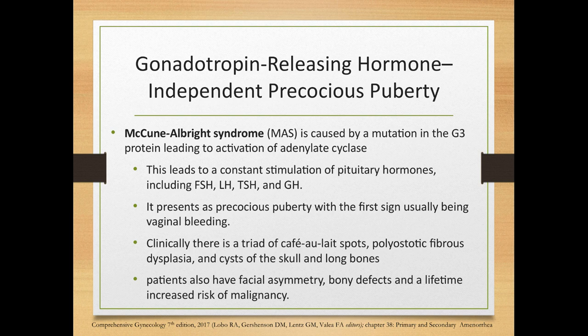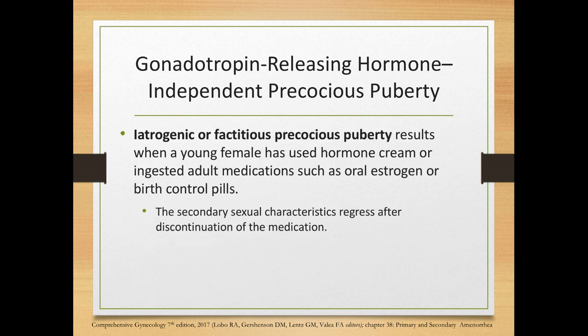McCune-Albright syndrome is caused by a mutation in the G-protein leading to activation of adenylate cyclase, resulting in constant stimulation of pituitary hormones including FSH, LH, TSH, and growth hormone. It presents as precocious puberty with the first sign usually being vaginal bleeding. Clinically, there is a triad of café-au-lait spots, polyostotic fibrous dysplasia, and cysts of the skull and long bones. Patients also manifest facial asymmetry, bony defects, and a lifetime increased risk of malignancy.